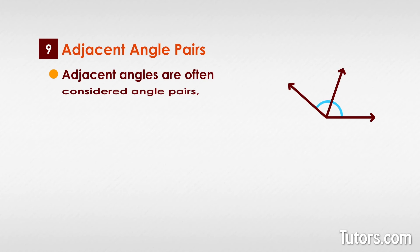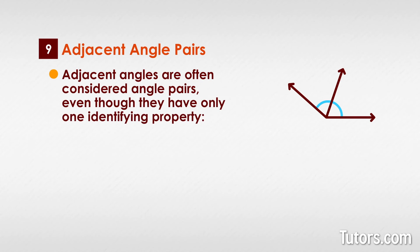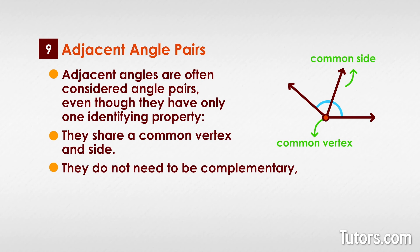Adjacent angles are often considered angle pairs, even though they have only one identifying property. They share a common vertex and side. They do not need to be complementary, supplementary, or special in any way.